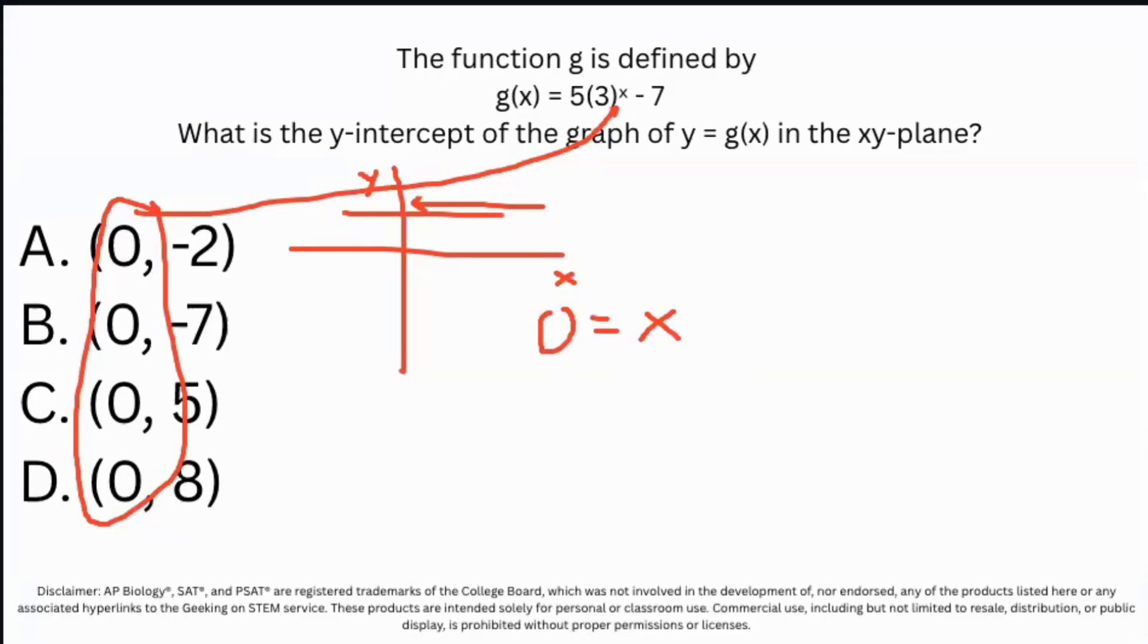When you go ahead and do that, you could plug that into Desmos, but you should know off the bat that three to any power of zero is automatically just going to be one. So in this case, it's just 5 minus 7, and that gives you negative two. So your best choice answer is A.